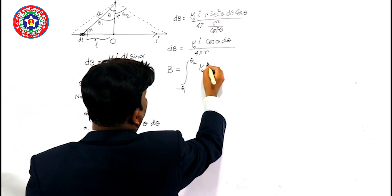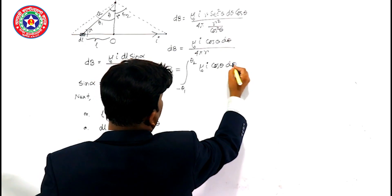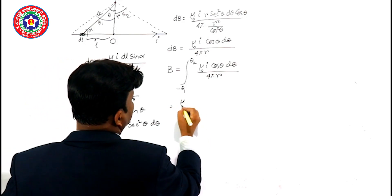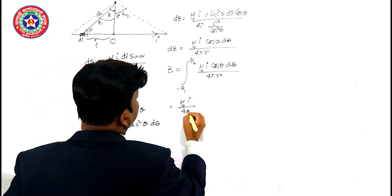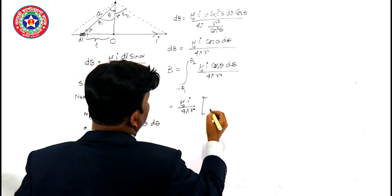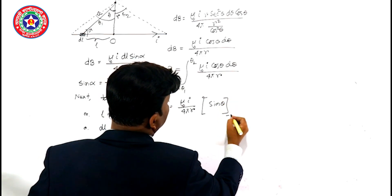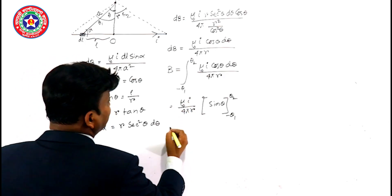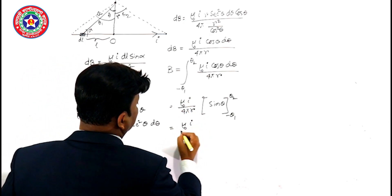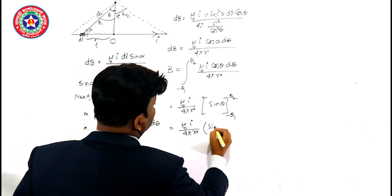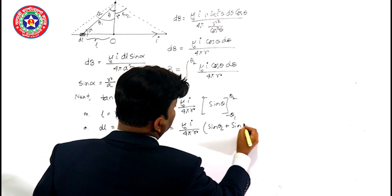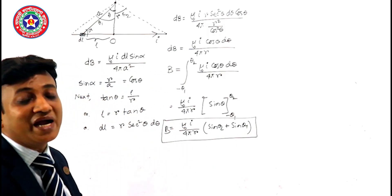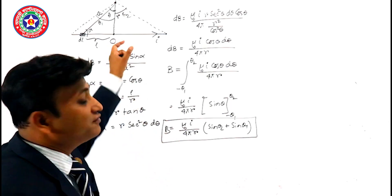So we integrate mu naught I cos theta d theta divided by 4 pi R from minus theta 1 to theta 2. After integration we get mu naught I divided by 4 pi R, with the bracket giving sin theta evaluated from minus theta 1 to theta 2. Putting in the limits, we get B equals mu naught I divided by 4 pi R into (sin theta 2 plus sin theta 1). This is the equation of magnetic field due to the finite length of wire.